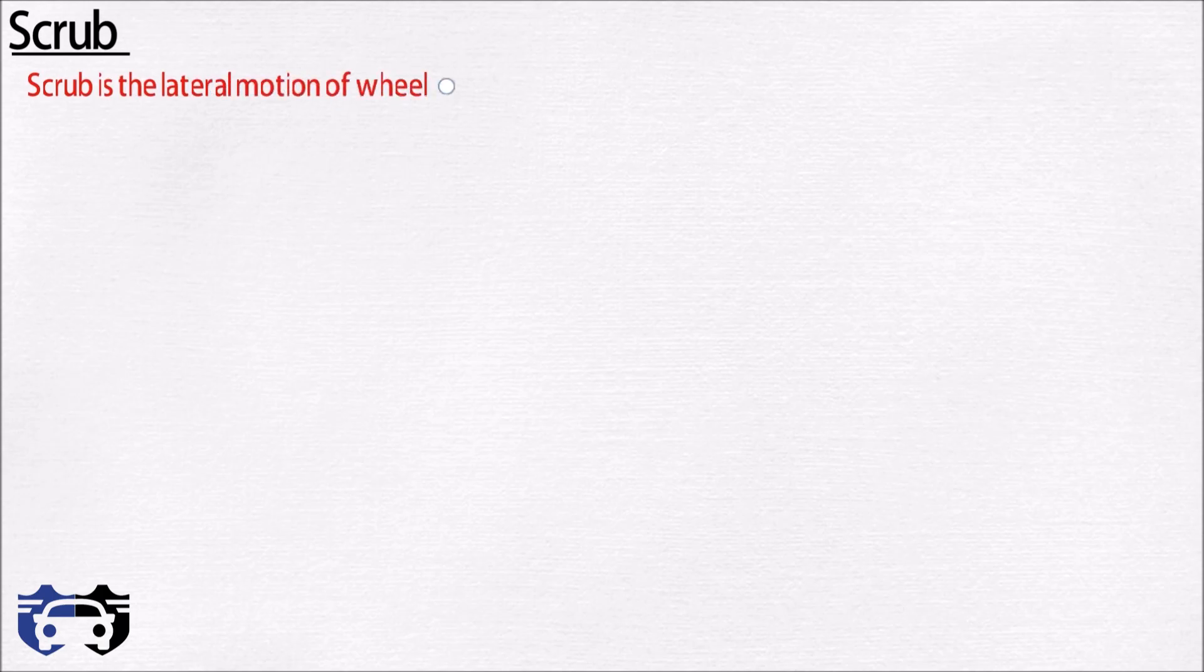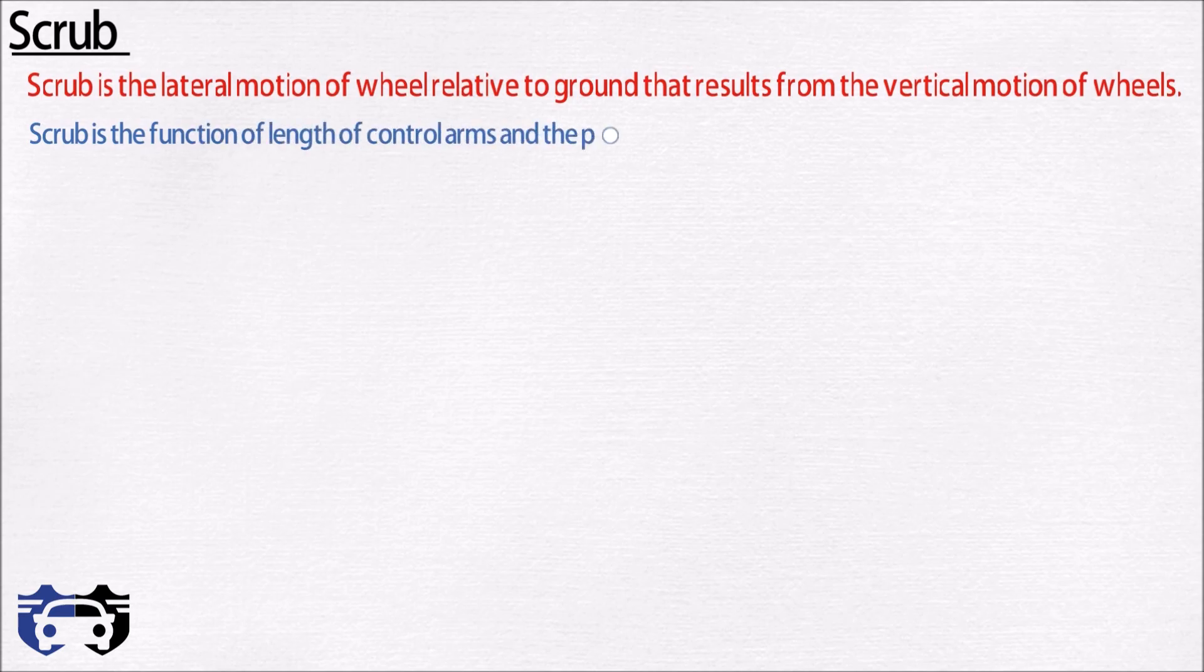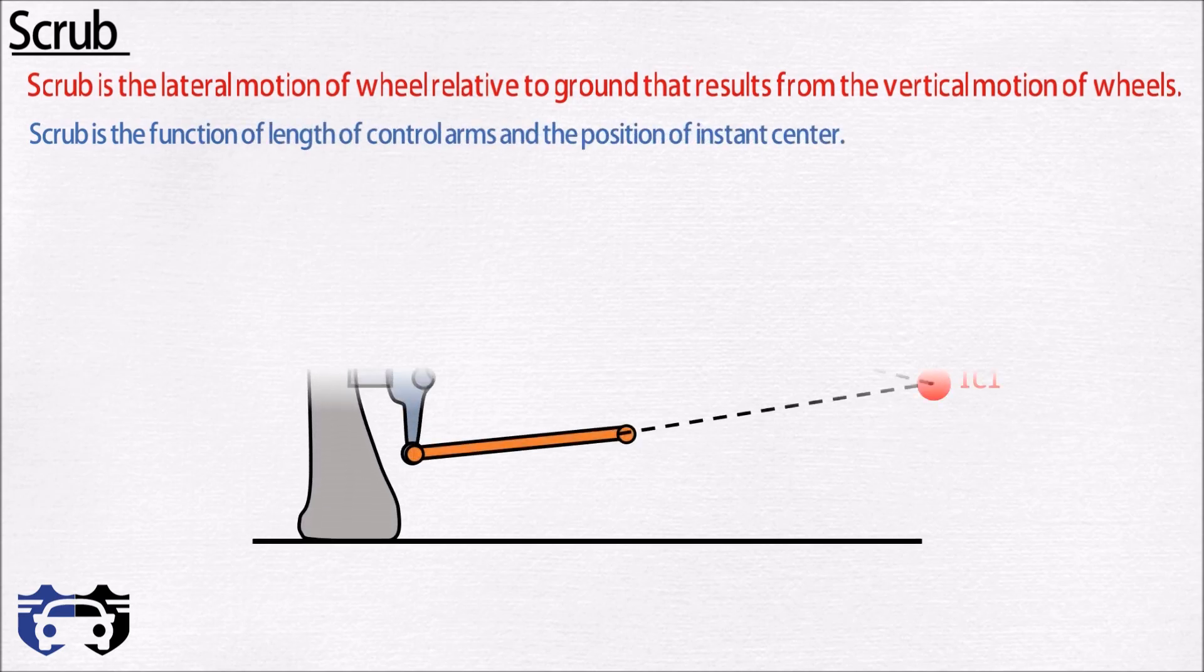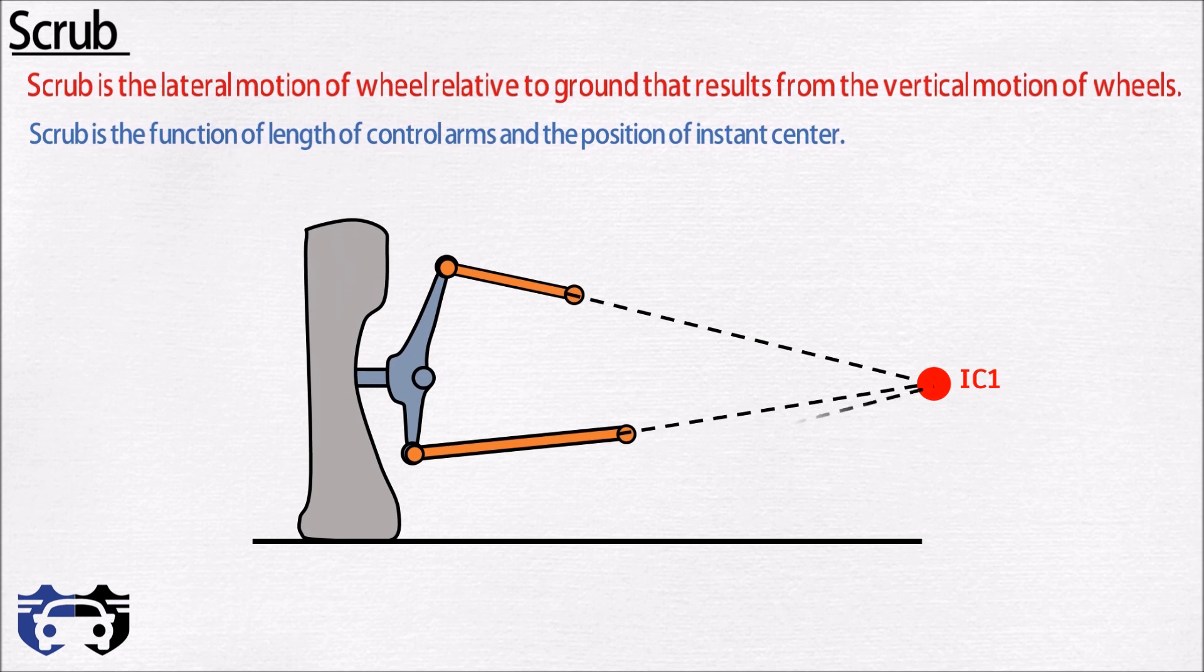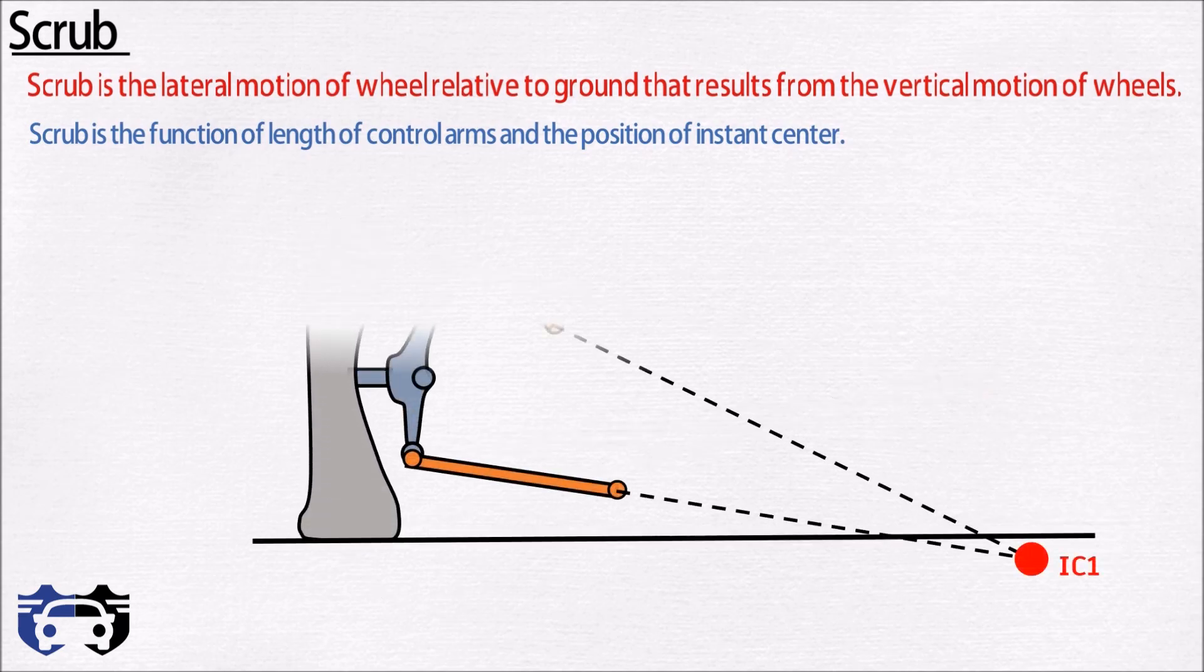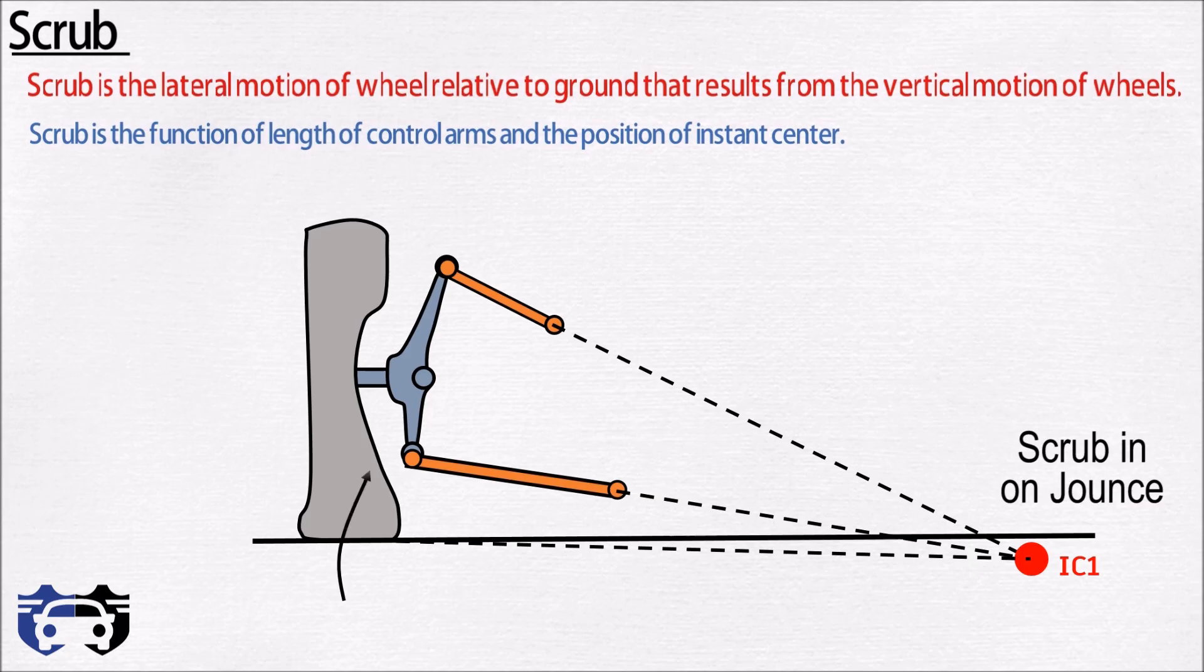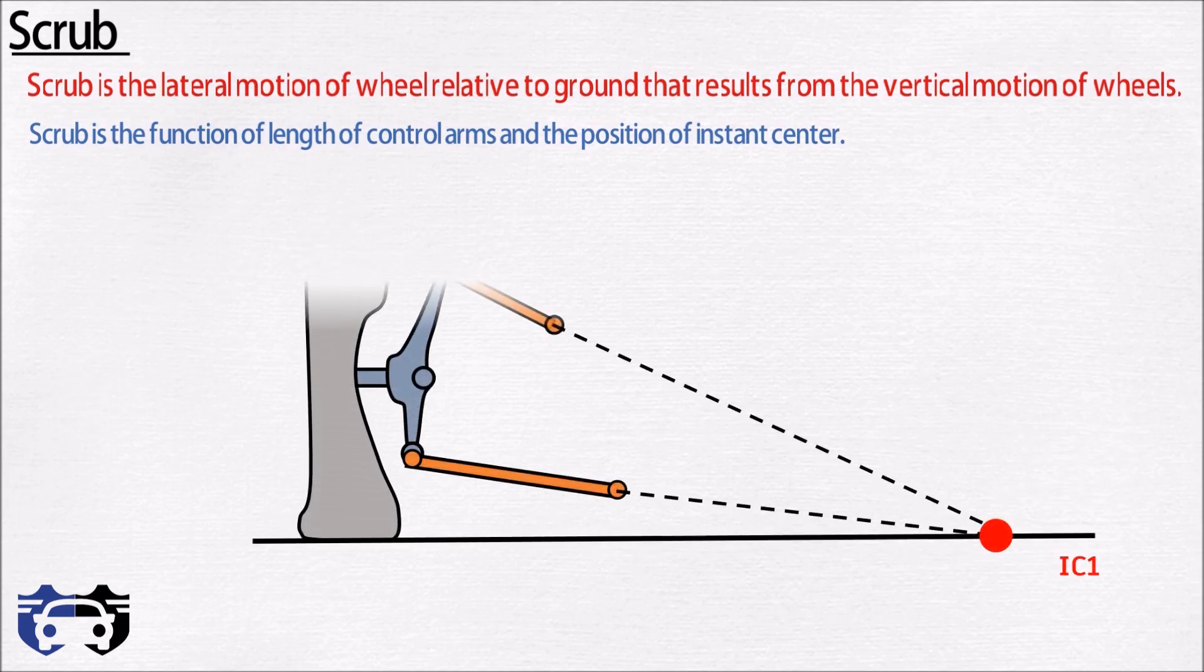Another front view variable is scrub. Scrub is the lateral motion of wheel relative to ground that results from the vertical motion of wheel. Scrub is the function of length of control arms and the position of instant center. If the instant center is above the ground and it is inboard, the tire will move outward or scrub out as it jumps. If the instant center is below the ground level and inboard, the tire will move inward or scrub in during jounce. There will be minimum scrub when the instant center is located on the ground.